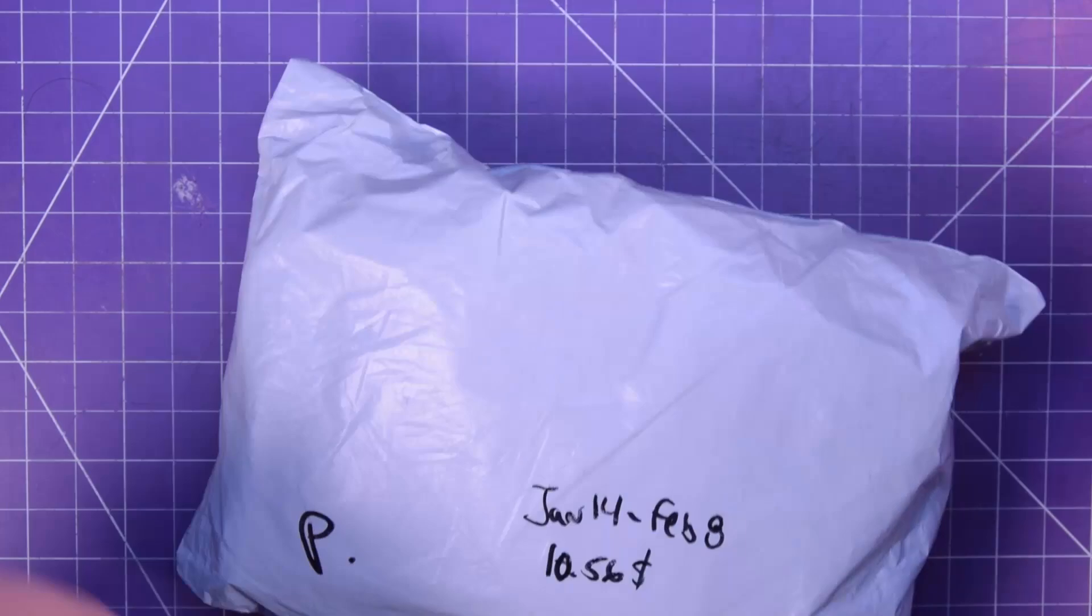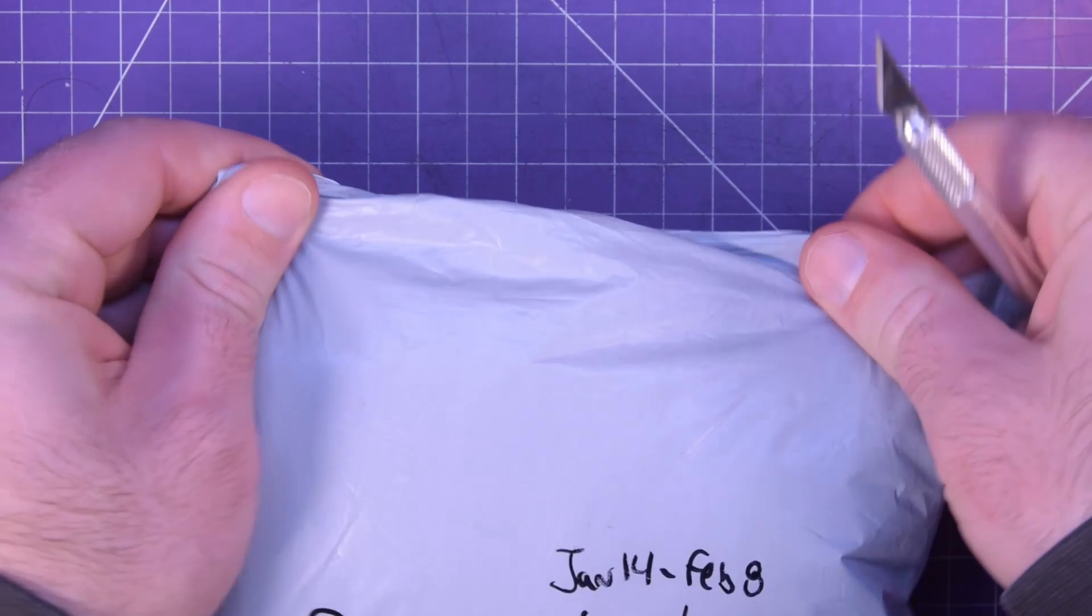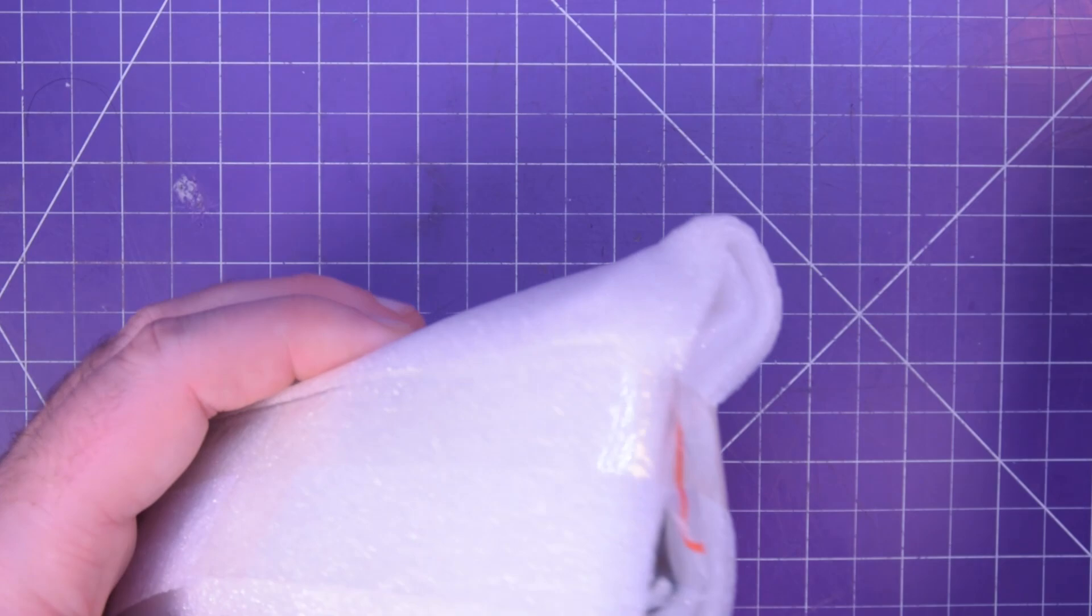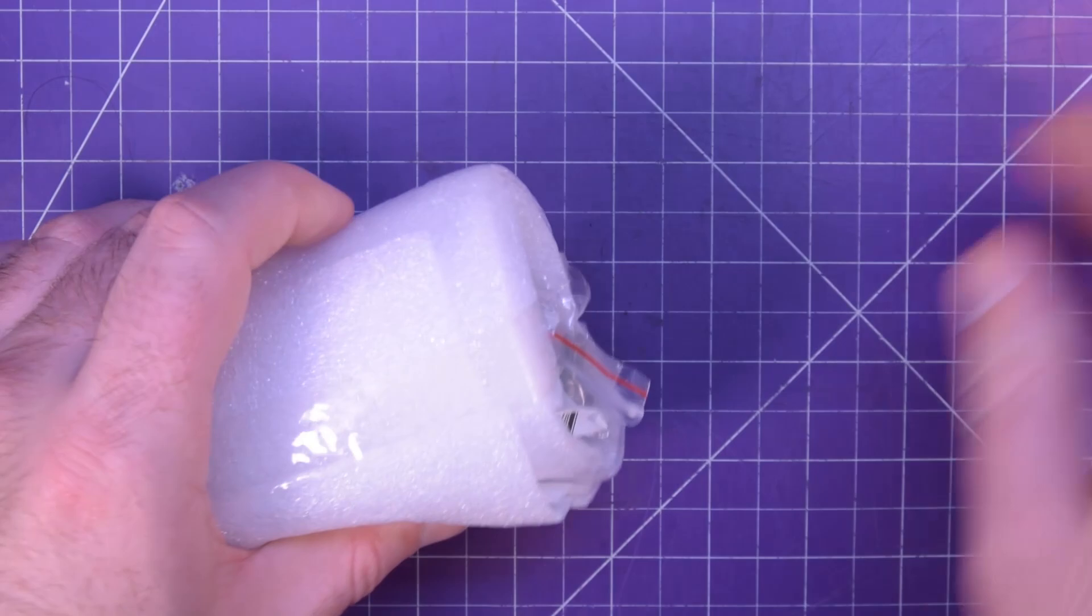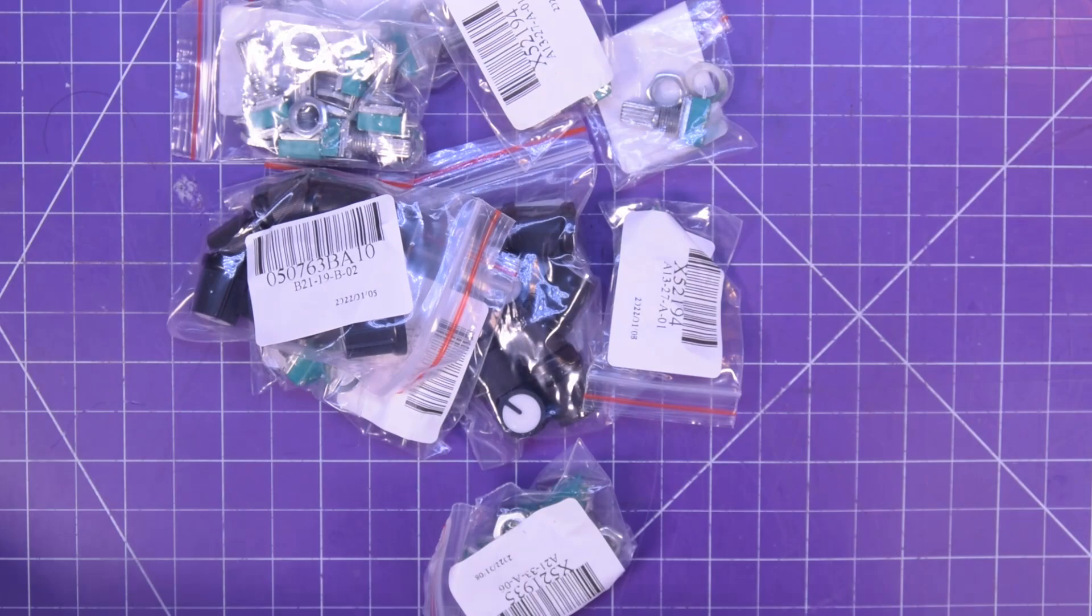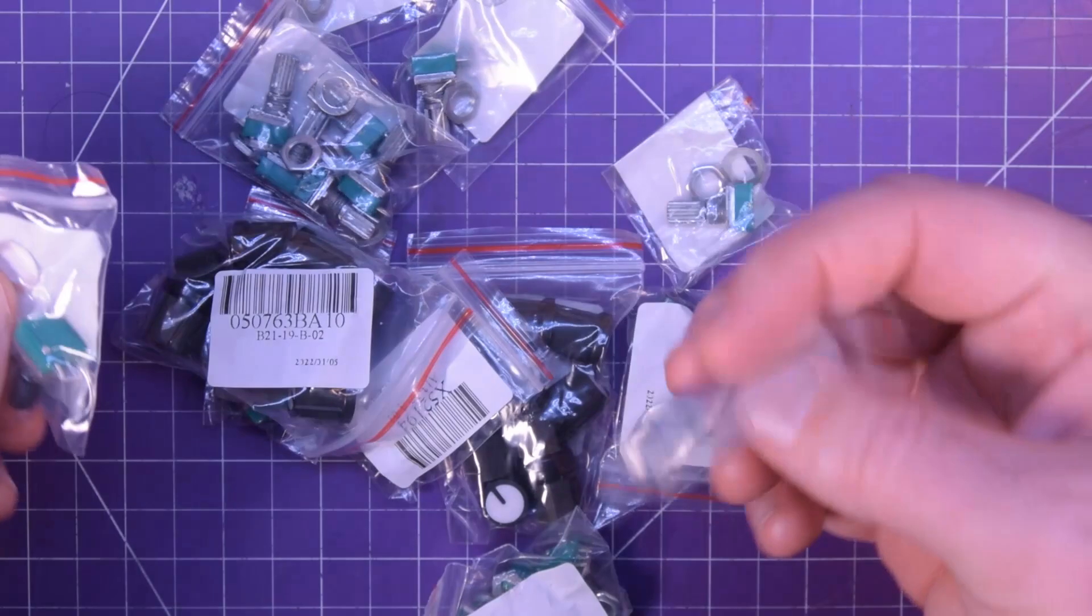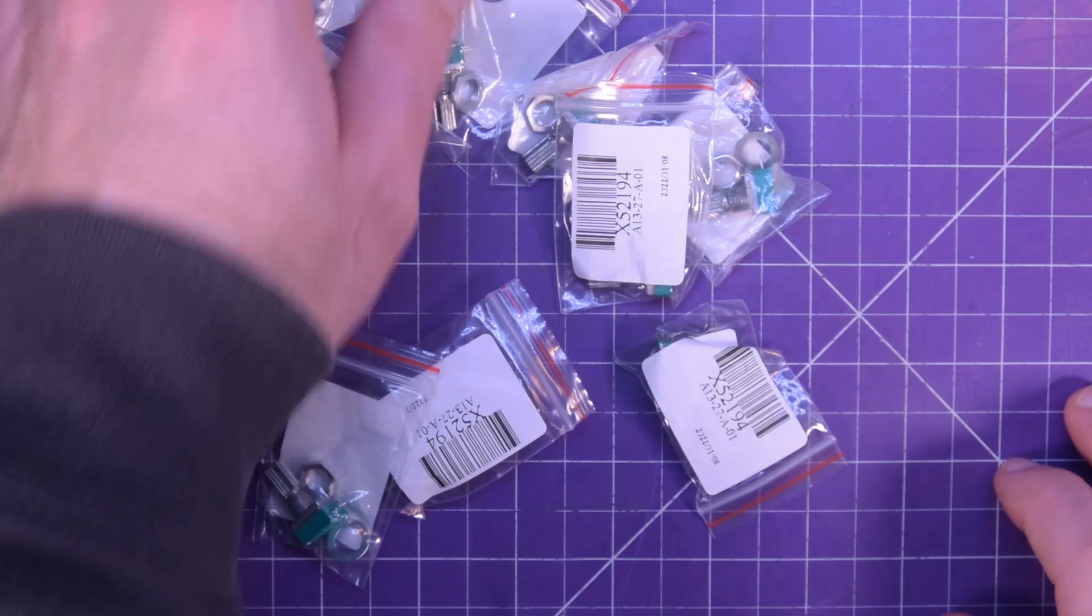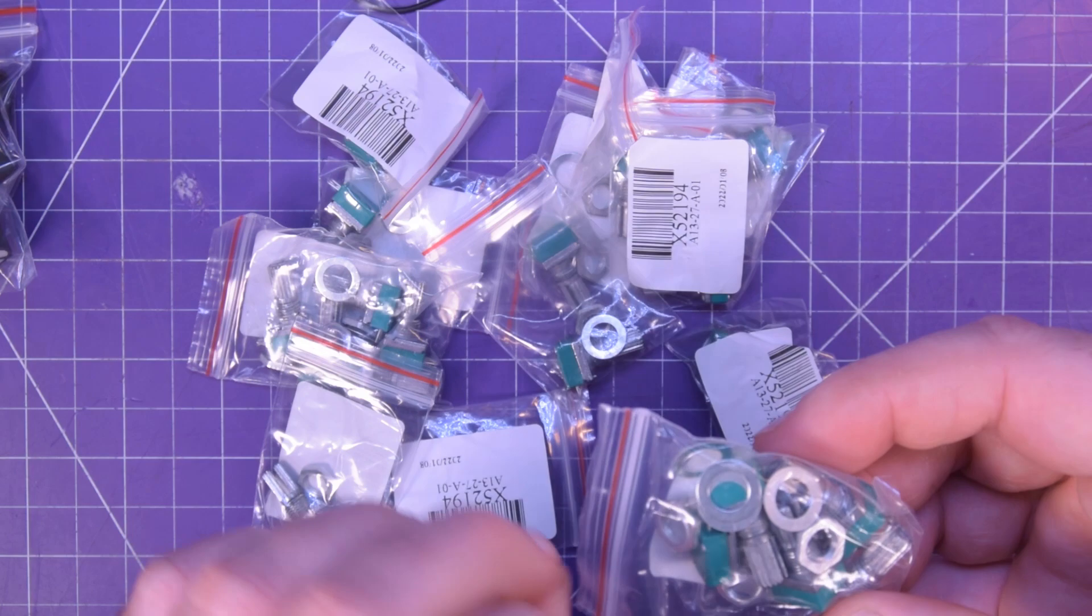On to the next one. Next one up is this one here, paid $10.56, January 14th ordered, February 8th arrived. Oh boy. Don't forget guys, there's gonna be fewer mail bags going on, simply because I don't go back to work for another bunch of months. That's okay, like I've got plenty of stuff I can make projects out of. Just the mailbag videos will slow down. Interesting. So these are potentiometers.